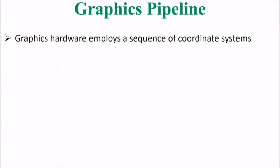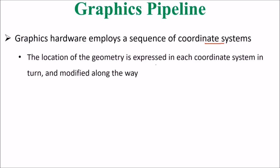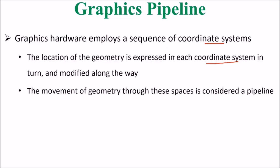So the graphics pipeline, graphics hardware employs a sequence of coordinate systems. The location of the geometry is expressed in each coordinate system in turn, and modified along the way. The movement of geometry through these spaces is considered a graphics pipeline.